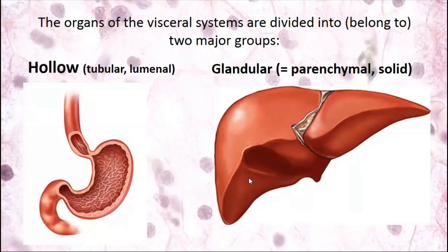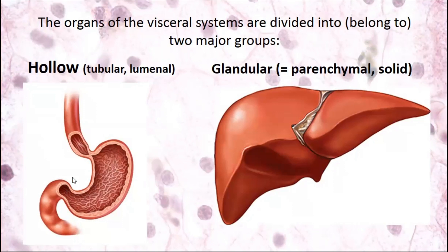We divide all organs of visceral systems into two basic groups: hollow, tubular, or luminal organs; and glandular or parenchymal solid organs. When you answer a question about the histology of some organ, you should first classify it — is this organ hollow, and you describe the layered structure of the wall; or is it glandular or parenchymal, and you describe features of the tissue. If you need to revise hollow organs, go to the previous lecture: Part One, histology of the hollow organs.